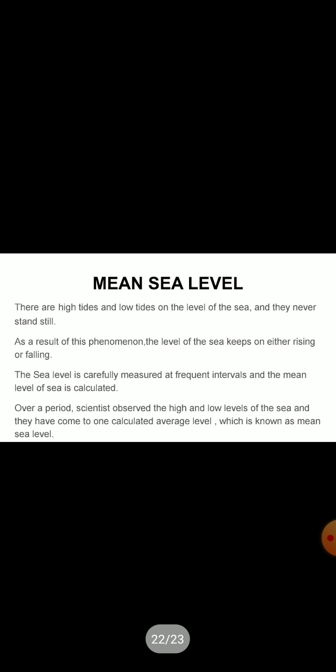To calculate all these heights, we have to find out the mean sea level. There are high and low tides on the level of the sea and they never stand still. As a result, the level of the sea keeps on either rising or falling. The level of the sea is carefully measured at frequent intervals and the mean sea level is calculated. Scientists observed the high and low levels of the sea over a period and came to one calculated average level, which is known as mean sea level.